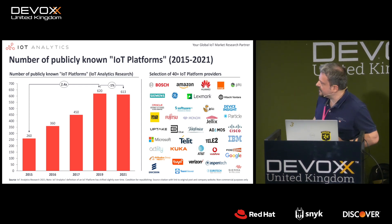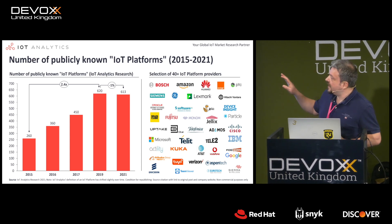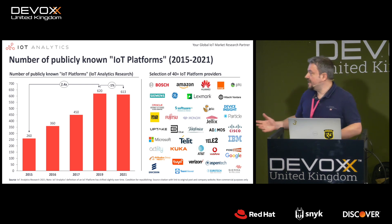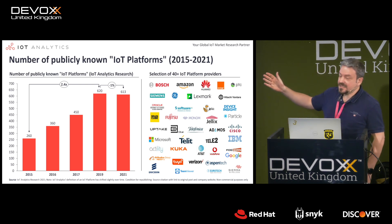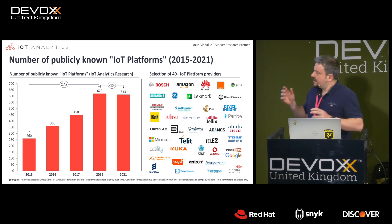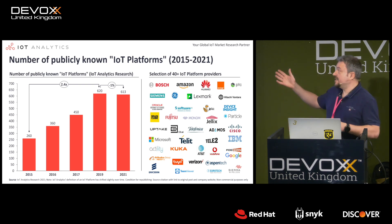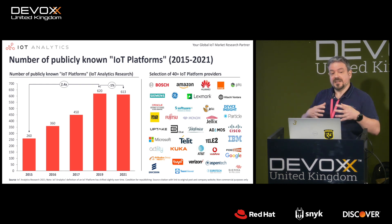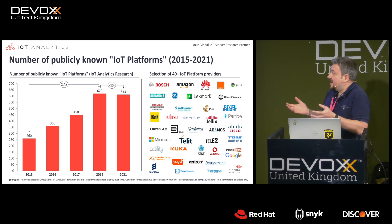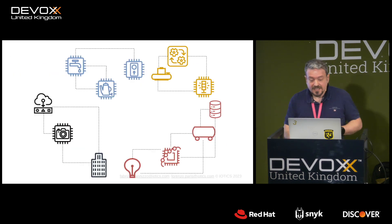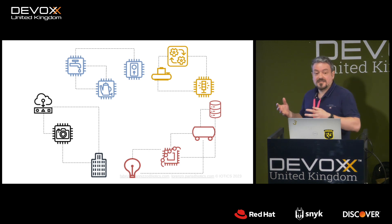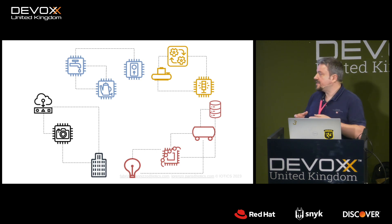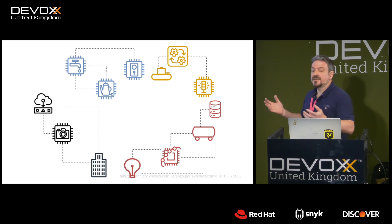According to IoT Analytics, there are 620 known public IoT platforms — and counting. Some come, some go. The business model of each hyperscaler is to concentrate everything into essentially independent silos. So as long as devices belong to the same IoT platform, you're fine, but otherwise these silos don't talk to each other.